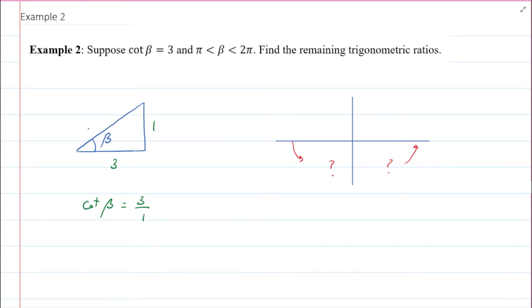Now if I have these, I can use the Pythagorean theorem to actually find the hypotenuse, which is going to be 3 squared, which is 9, plus 1 squared. So that would be square root of 10. Now that I have these three sides, I should be able to find all trigonometric ratios.